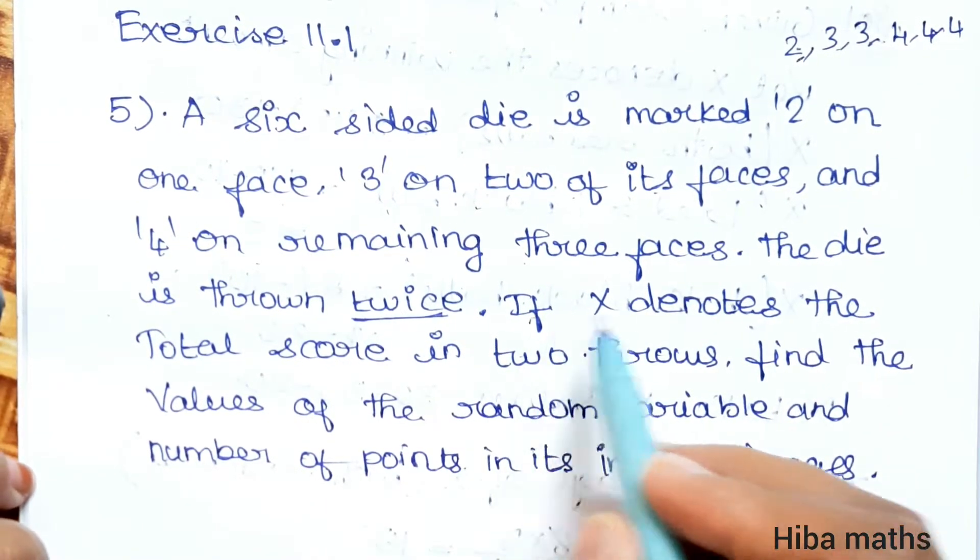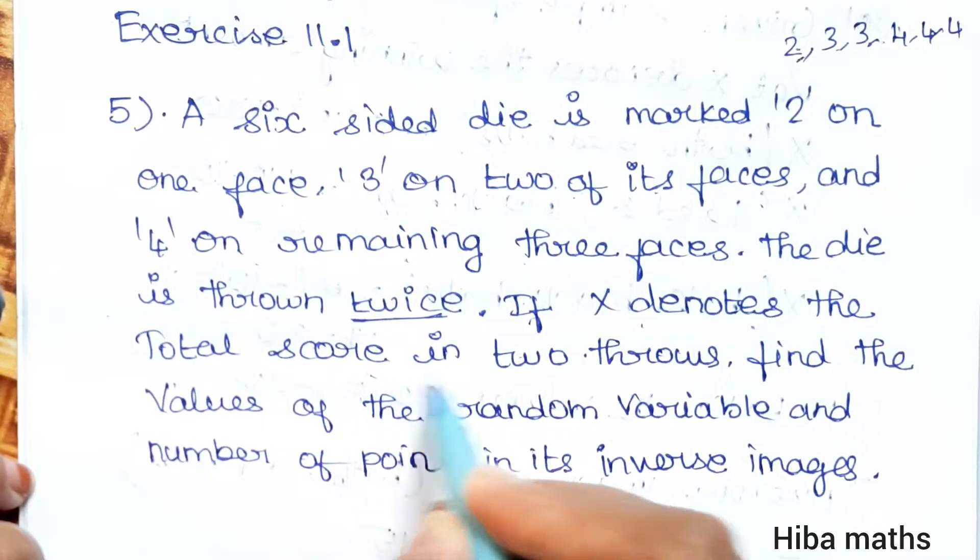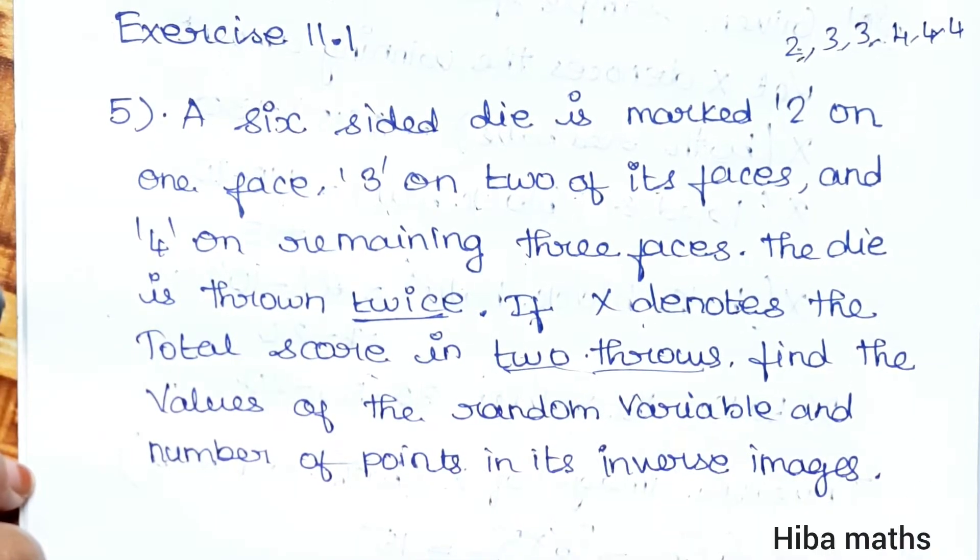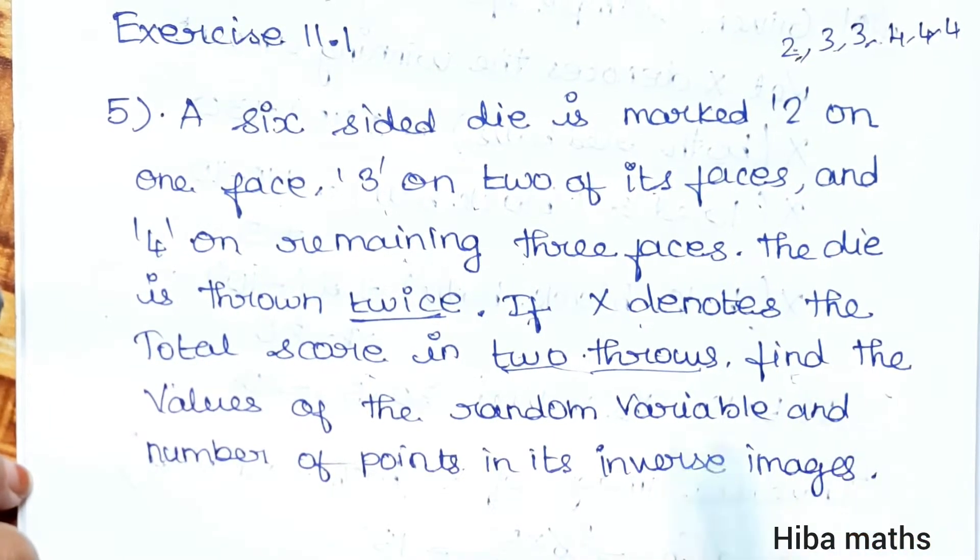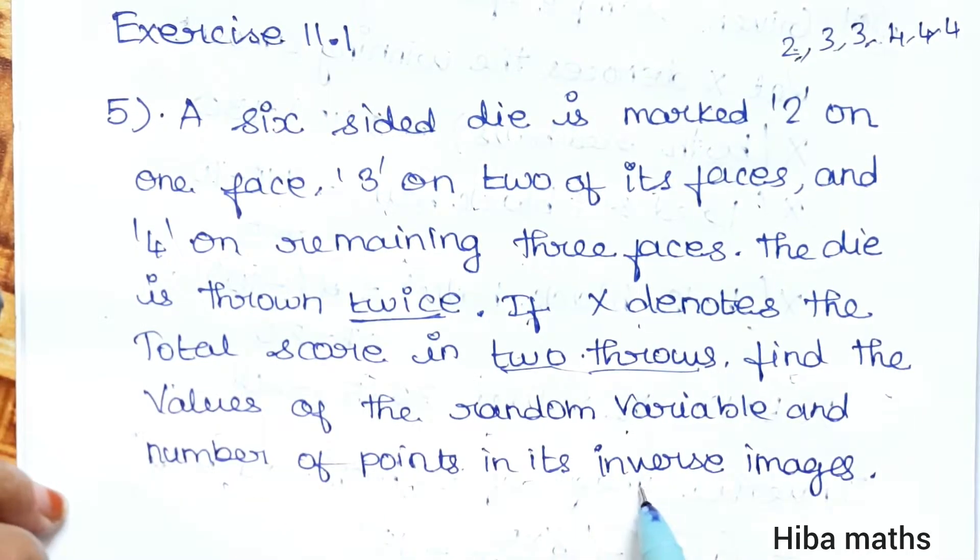If X denotes the total score in two throws, we have to find the value of random variable and number of points in its inverse images.